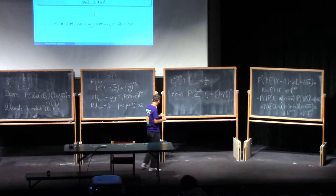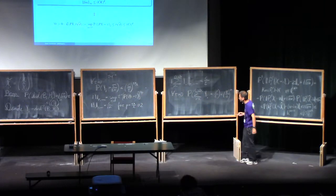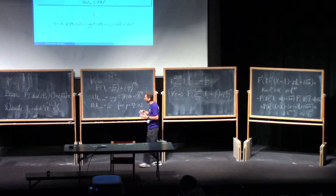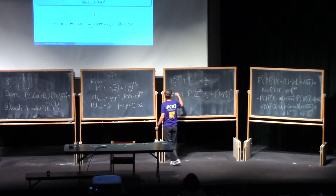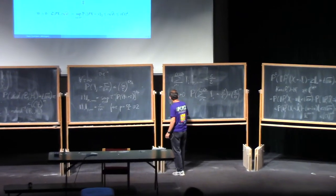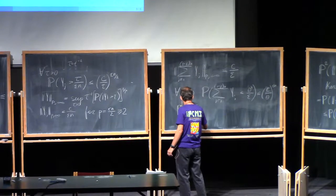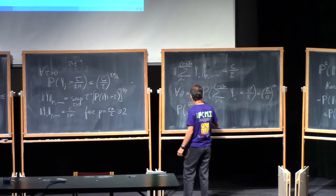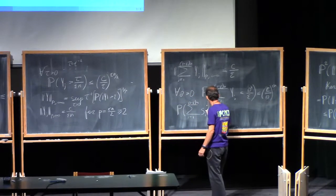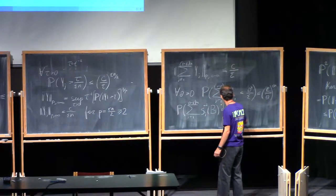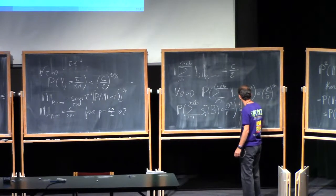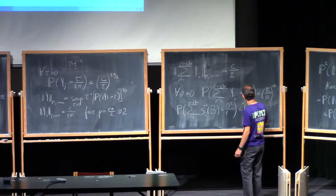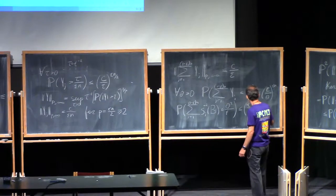All this was done not because we want to estimate distances between vectors and subspaces, but because of the negative second moment formula. At this point we can write that for any theta positive, the probability that the sum j from 1 to (1 minus epsilon)n of s_j(B) to the negative 2 is less than or equal to theta squared to the power epsilon is less than or equal to c over theta to the power epsilon n.